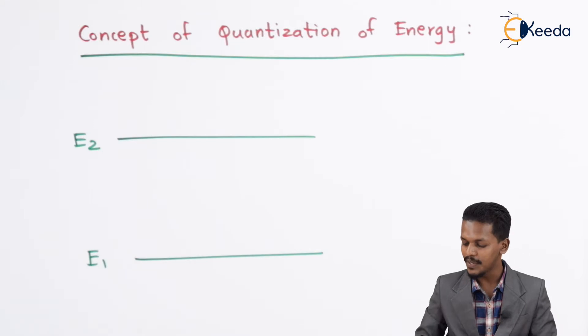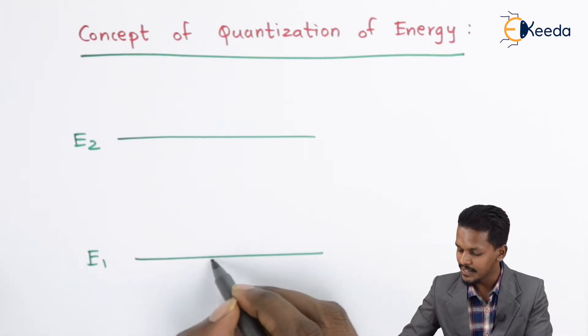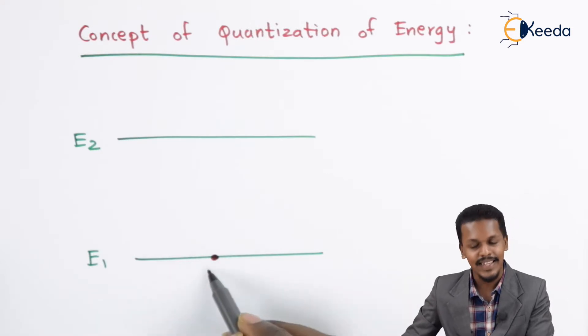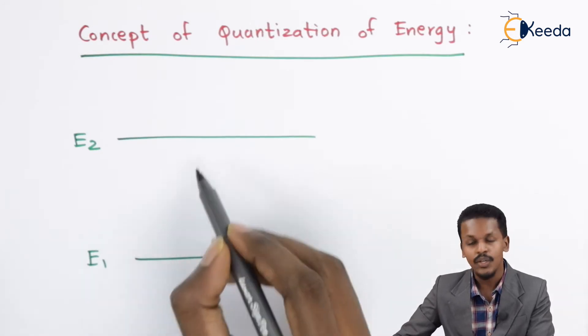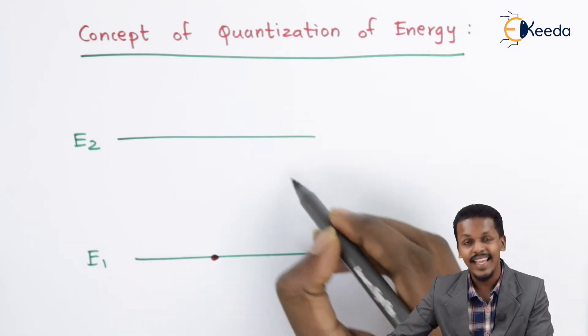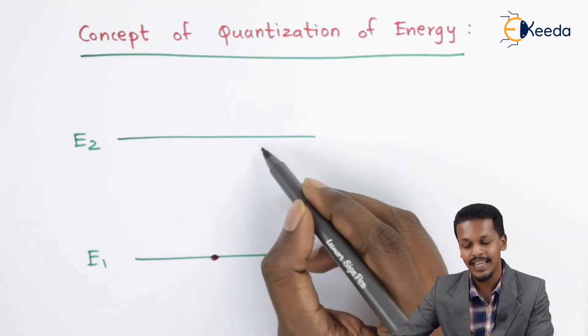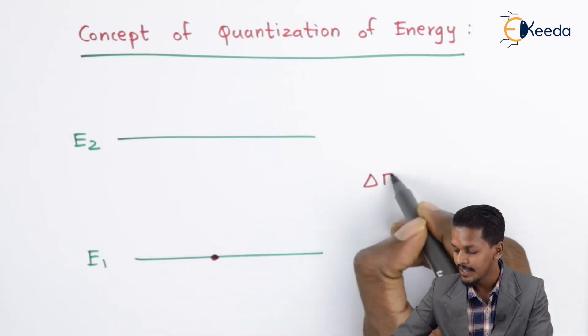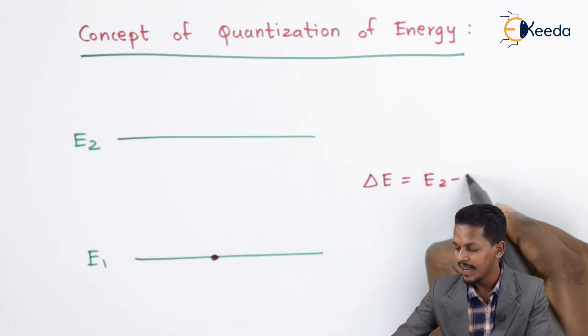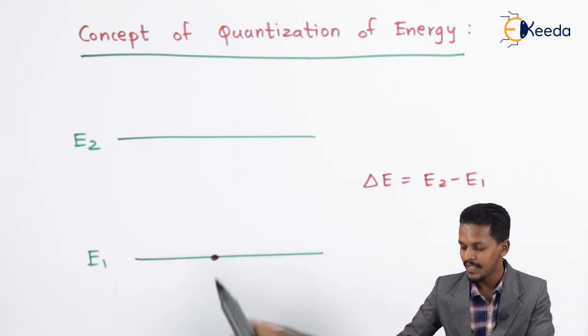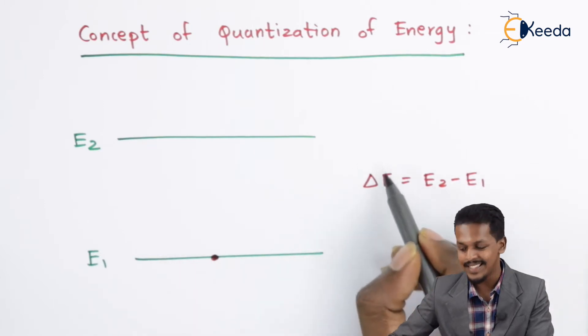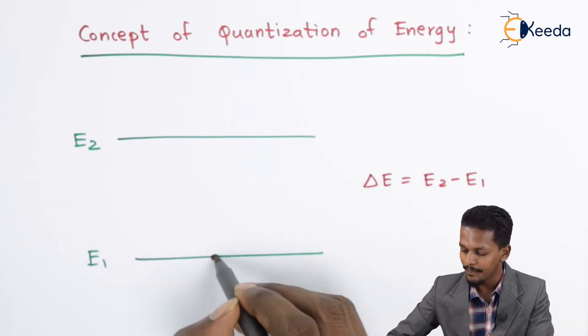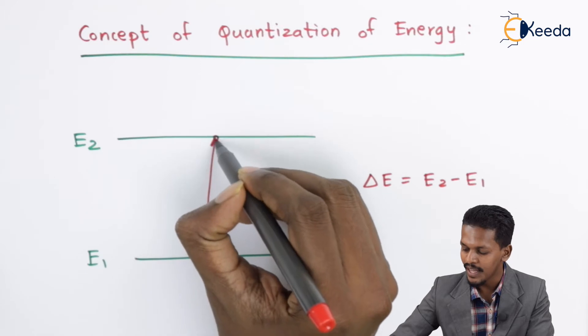Suppose the electron is present in the lower energy level E1. If we have to excite this electron from E1 to E2, we have to provide the energy that is the gap between these two - the difference between the higher energy level and the lower energy level. If we provide this delta E energy to the electron, it can be shifted to the higher energy level.